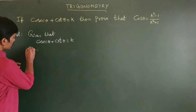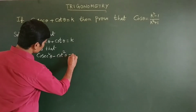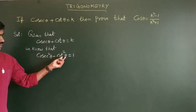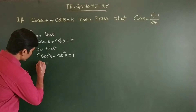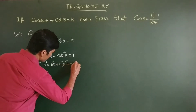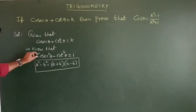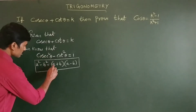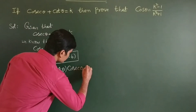We know that cosecant squared theta minus cot squared theta is equal to 1. This is in the form of a squared minus b squared. So, what is the formula of algebraic identity? a squared minus b squared is equal to a plus b into a minus b. So, we can write cosecant squared theta minus cot squared theta as cosecant theta plus cot theta into cosecant theta minus cot theta.